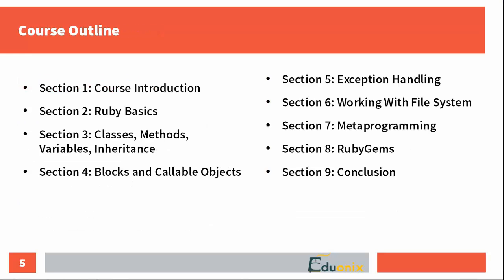Here is a brief outline of the course. In the first section, we'll lay foundations and install Ruby on your PC. In section two, we'll cover the basics of Ruby — cycles, conditions, variables and similar constructs. In section three, we'll continue with variables and also cover classes, methods, modules, and inheritance — probably the most important section since Ruby heavily relies on its object-oriented system.